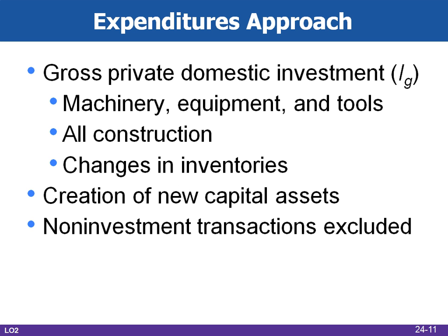Anywhere from two-thirds to three-fourths of GDP can be accounted for just by looking at the consumer section. The second component of the expenditures approach is gross private investment, which includes all final purchases of machinery, equipment, and tools by businesses, all construction, and changes in inventories.